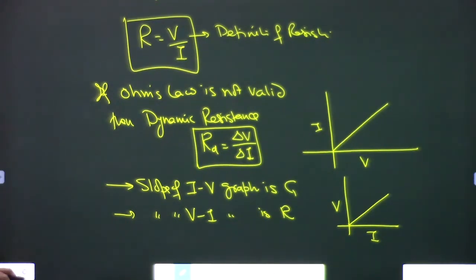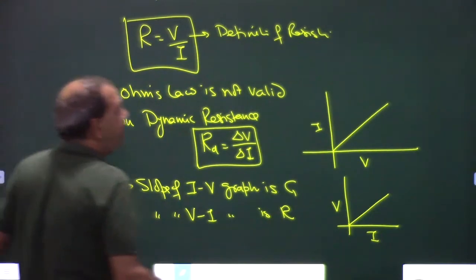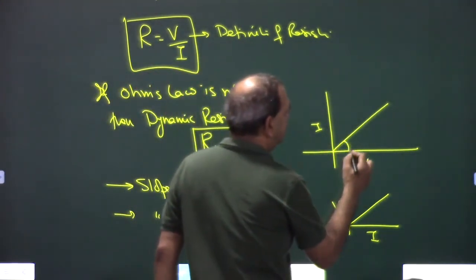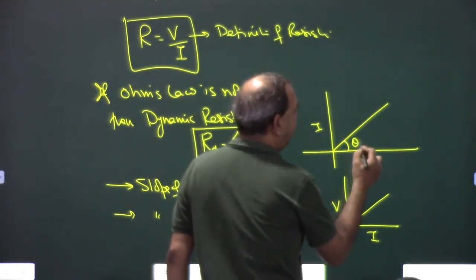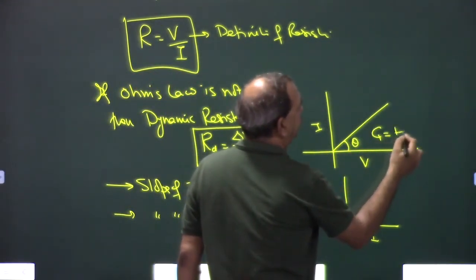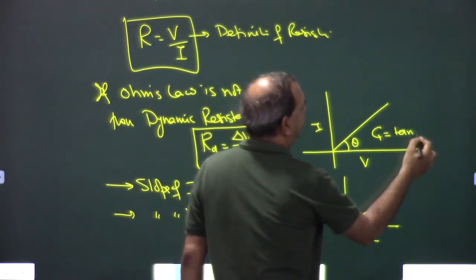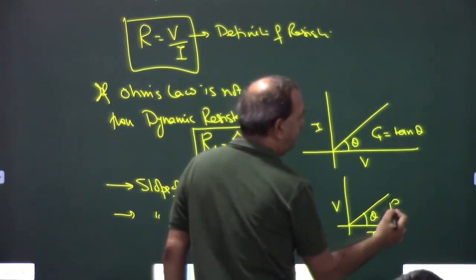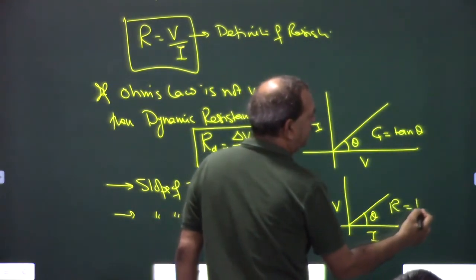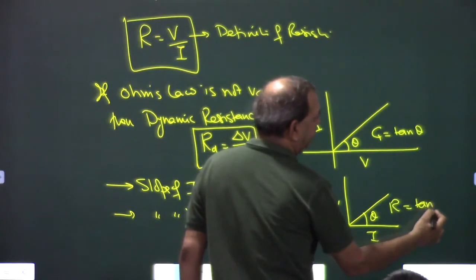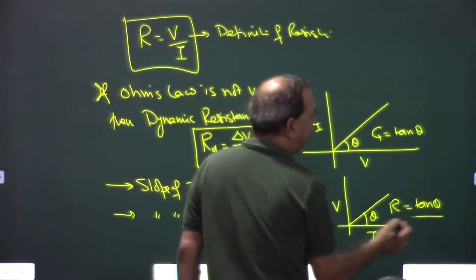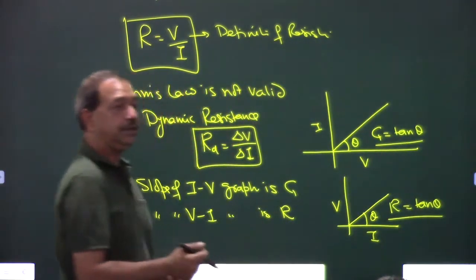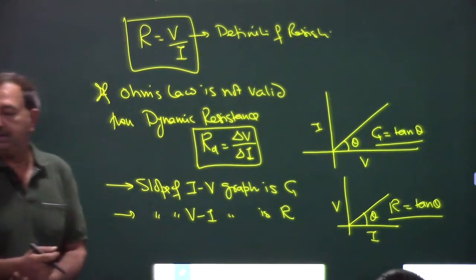If the angle is θ, then for an I-V graph the slope (conductance) G = tan θ, and for a V-I graph the slope (resistance) R = tan θ. Series and parallel combinations of resistance formulas are available and needed to solve circuits.